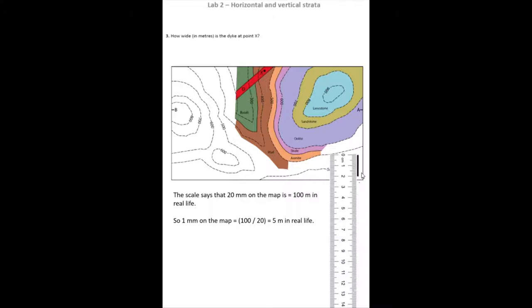So to work out how much 1 millimeter is, we divide that 100 meter length of the scale bar by 20 to give us 1 millimeter equals 5 meters. That's our scale factor.